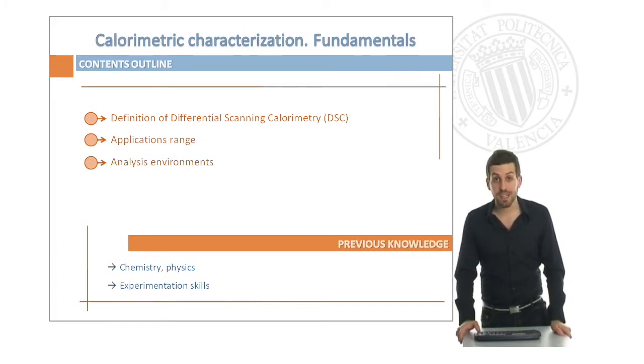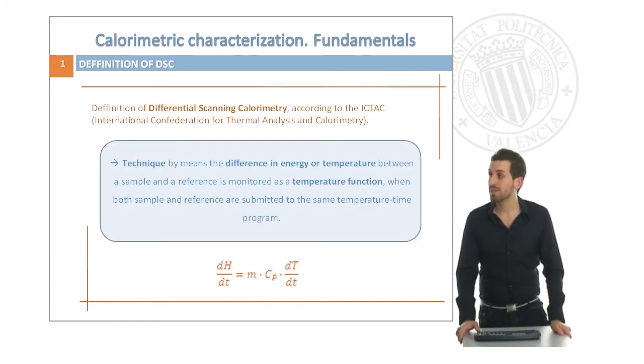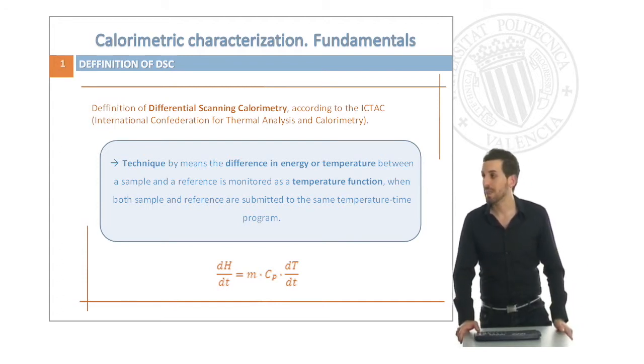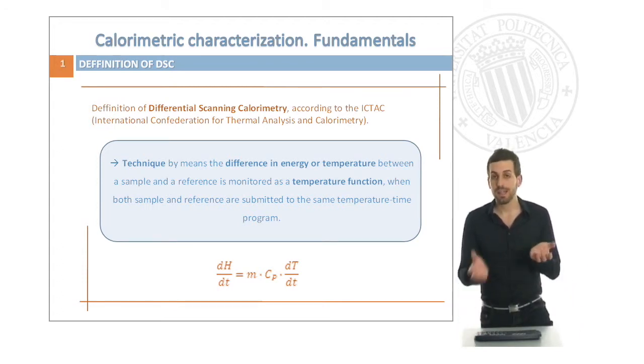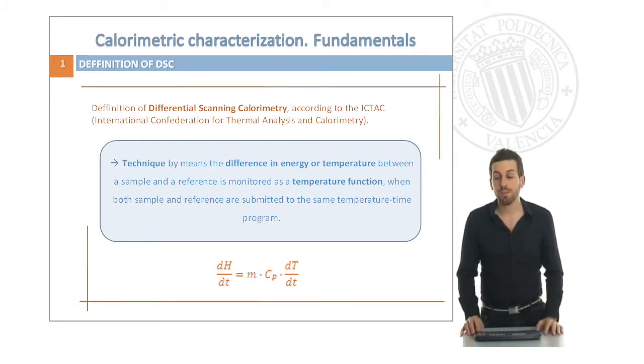Let's start with the definition of differential scanning calorimetry. According to the International Conference of Thermal Analysis and Calorimetry, differential scanning calorimetry is a technique in which the difference in energy or temperature between a sample and a reference is monitored as a temperature function when both sample and reference are submitted to the same temperature program.